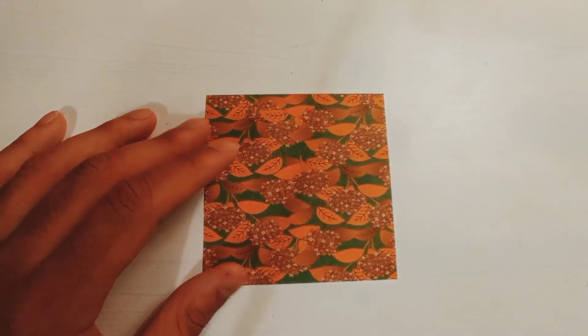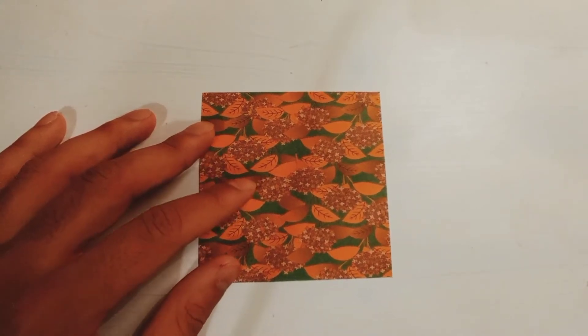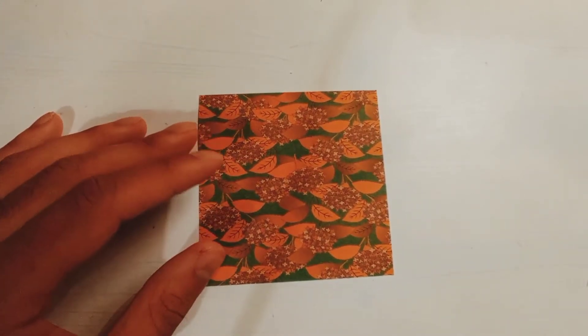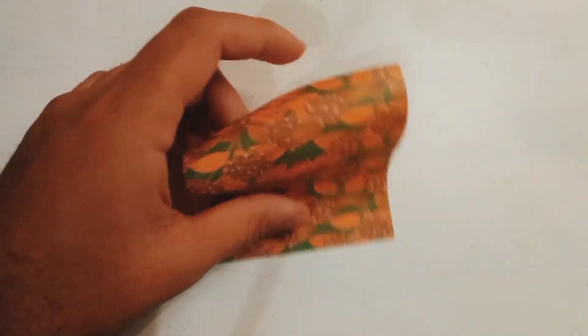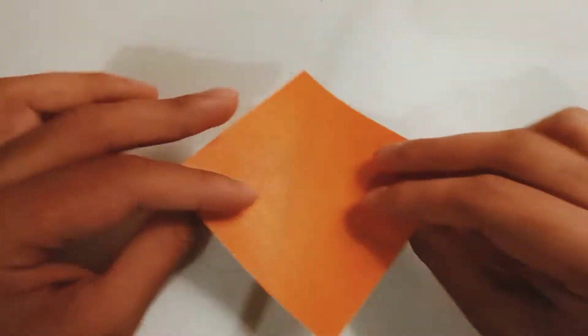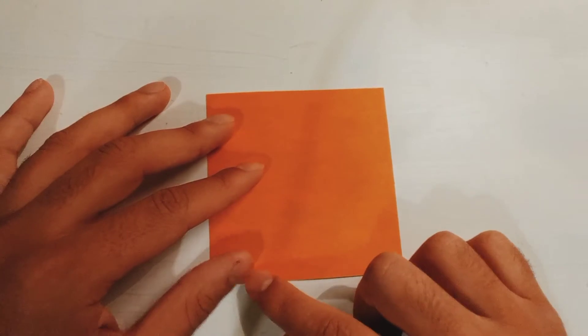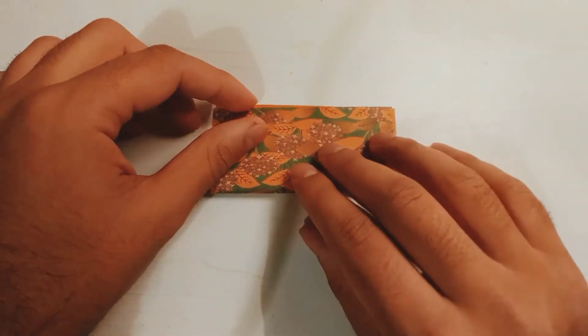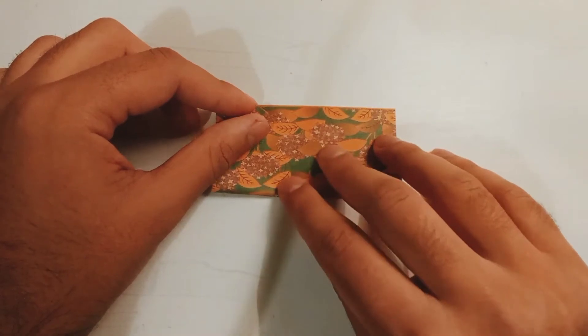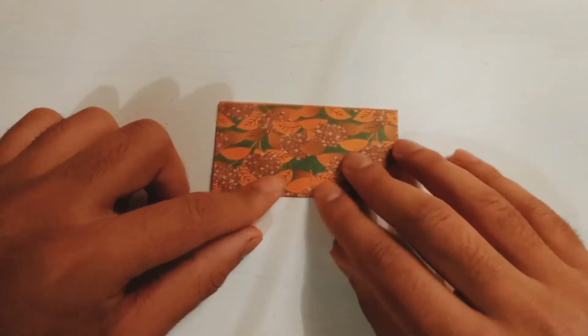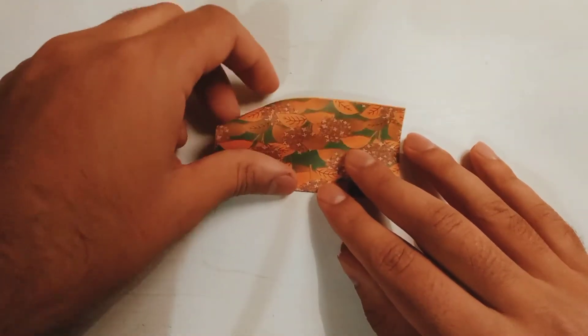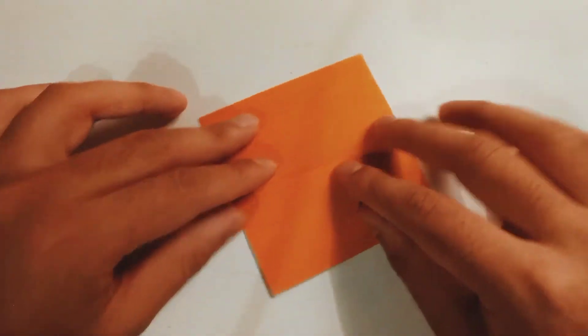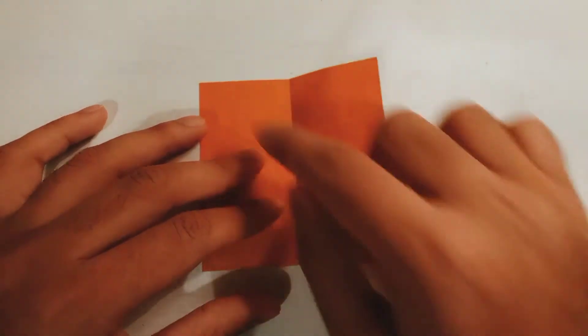You can use origami sheet, but you can use any paper you want. You can use A4 sheets or any color you like. The first step is to put the blank side up and fold the paper in half. Now open it back up and fold from this line to that line.